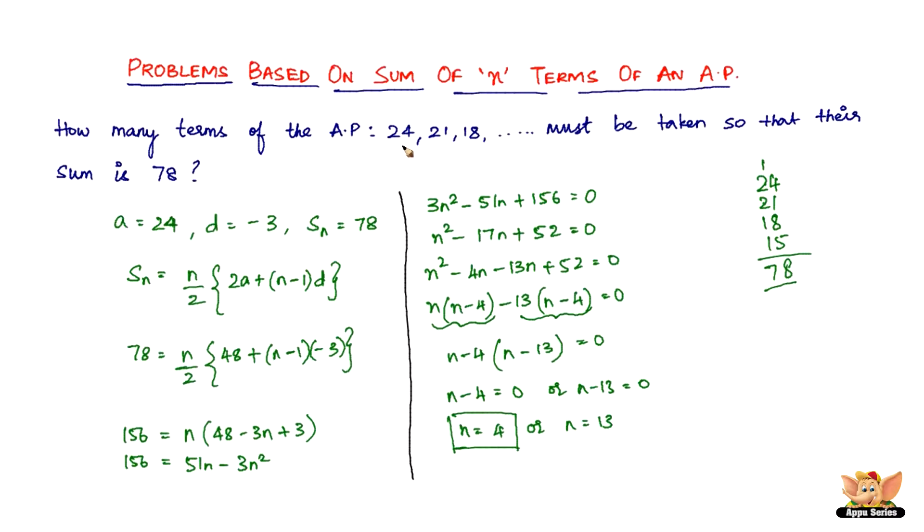So the number of terms of the AP 24, 21, 18 is 4 so that their sum is 78. It is not 13, it is 4. Of course, there are two possible answers, but we'll have to see according to the problem and then decide on what is the answer. So it is 4. This ends this problem. Let's solve another problem before we end this video.